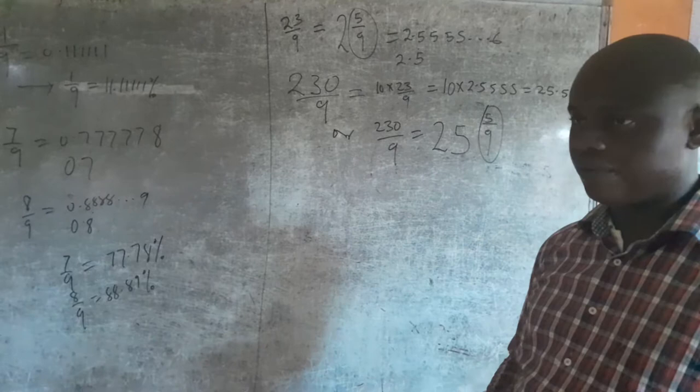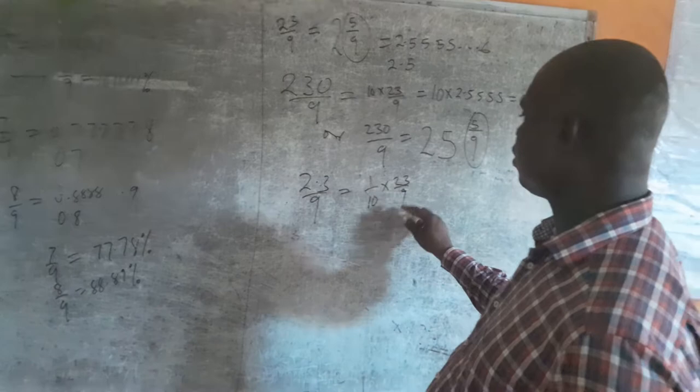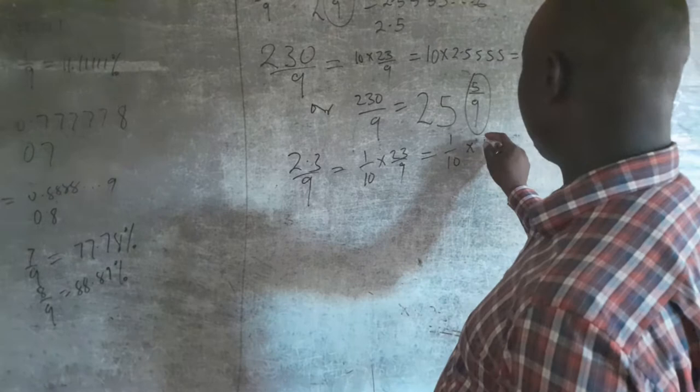If I have 2.3/9, which I know is one-tenth of 23/9, it means the result of 23/9 will be divided by 10. So 2.555 divided by 10 gives you 0.2555.